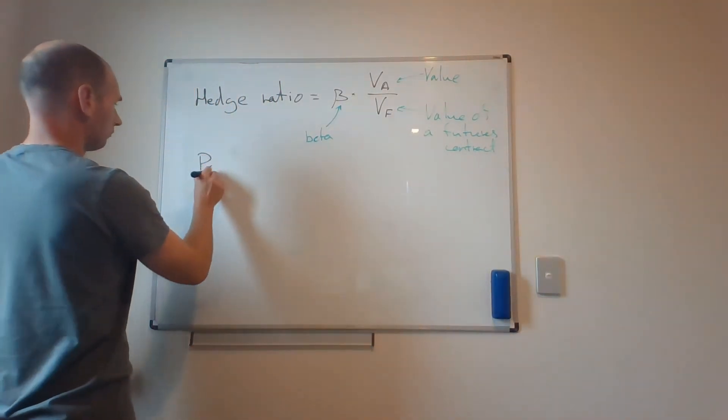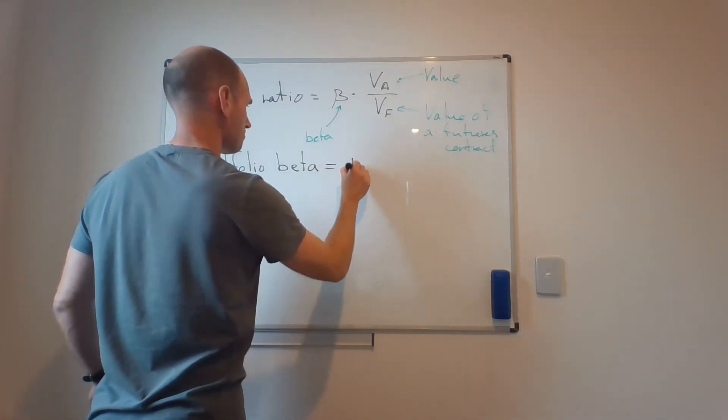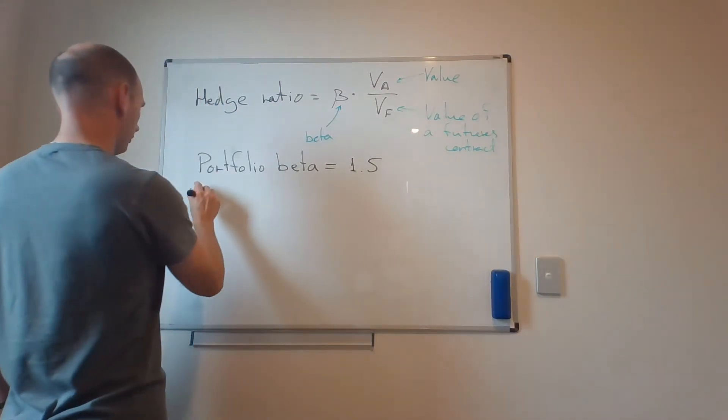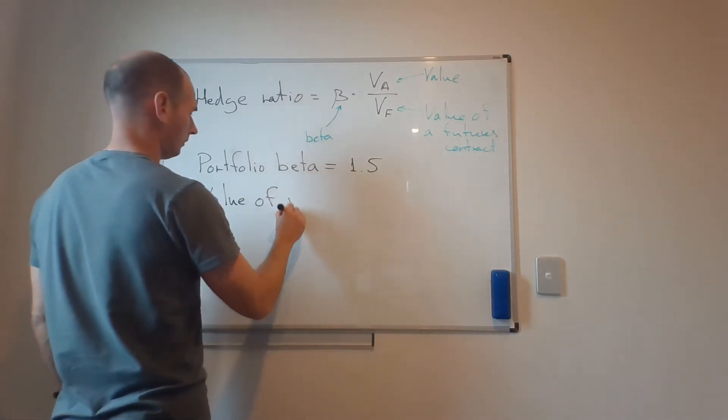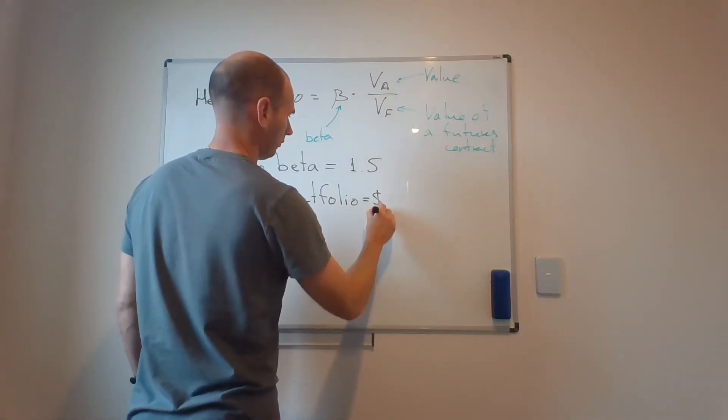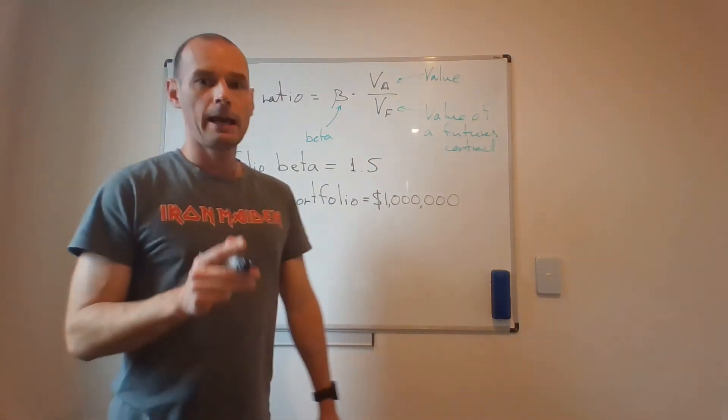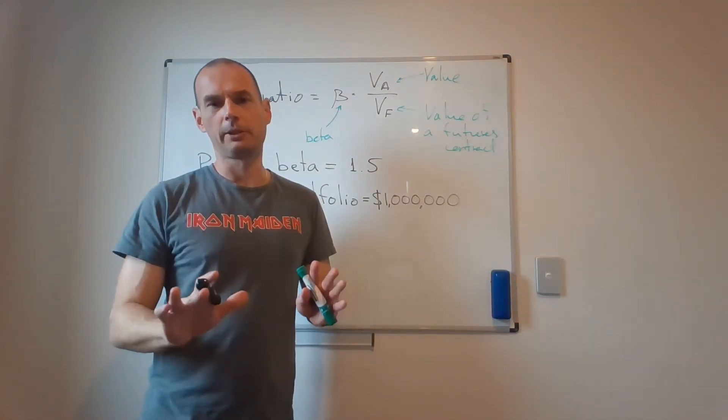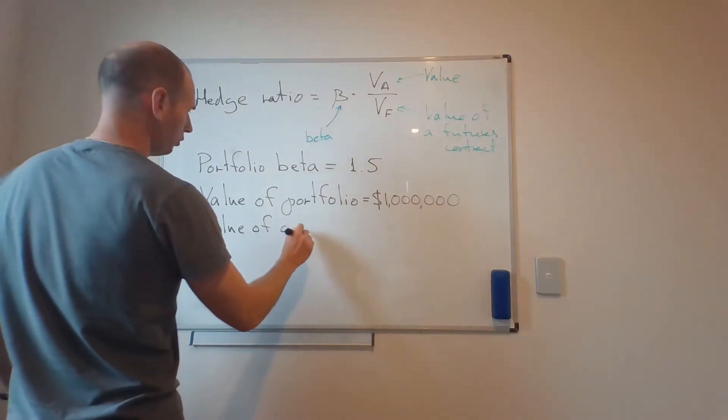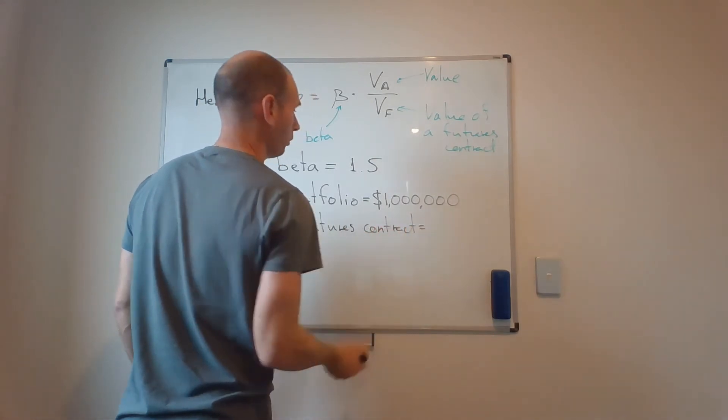So let's say that my portfolio beta is 1.5, and let's say that the value of my portfolio is $1 million, and just for the sake of simplicity, the value of the futures contract equals $100,000.